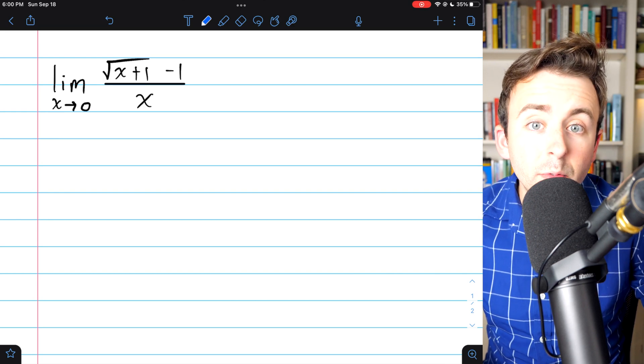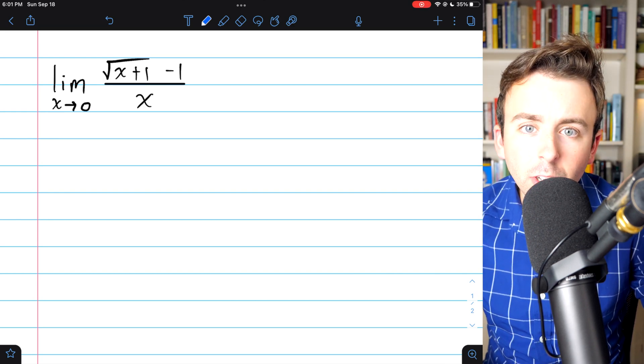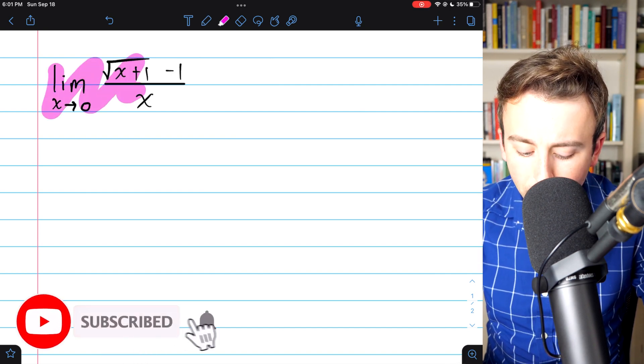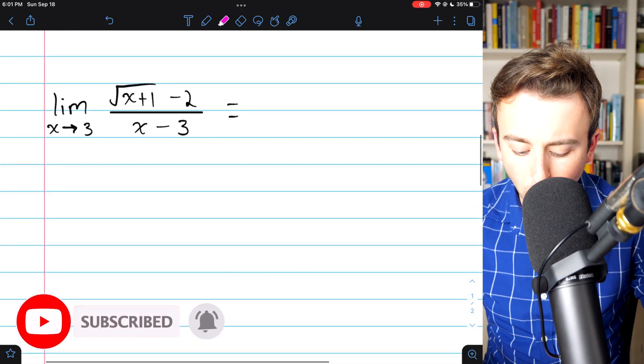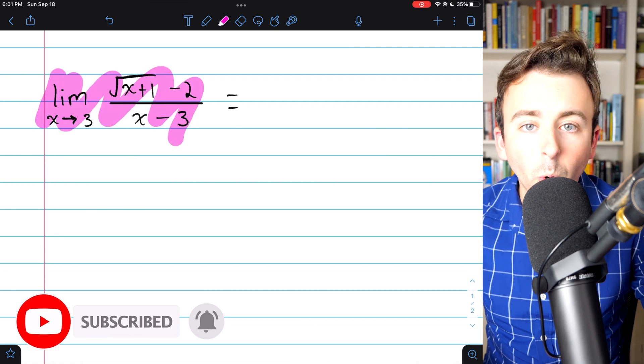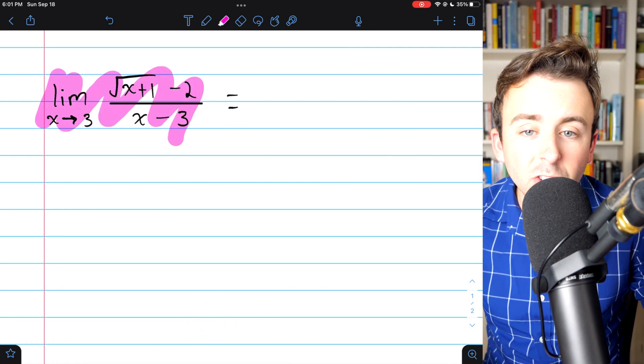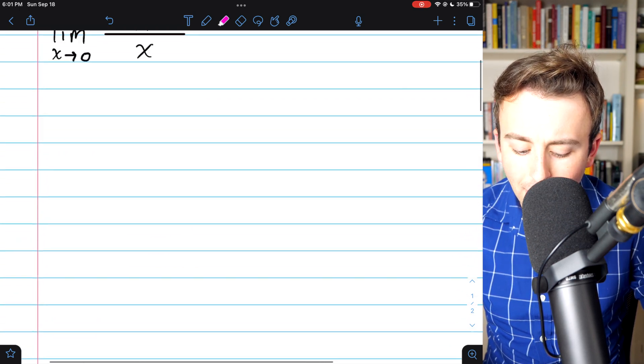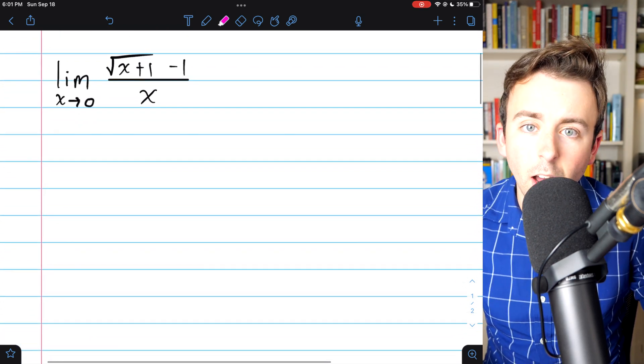We're going to go over how we can evaluate a limit by rationalizing the numerator or denominator. We'll do this example first, which is very straightforward, and then we'll do this slightly more complicated example. In each case, we'll be rationalizing the numerator, but it's the same idea whether you're rationalizing the numerator or the denominator.